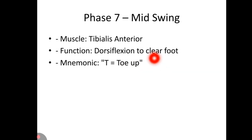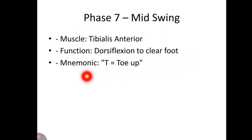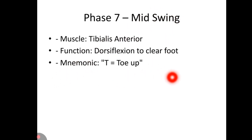Phase 7 is mid swing. The muscle involved is tibialis anterior, whose function is dorsiflexion to clear the foot. The mnemonic to remember is 'T — Toe Up.'